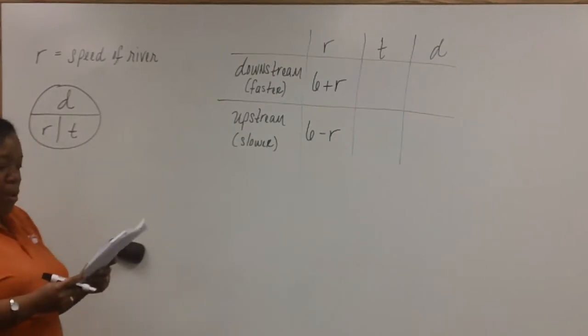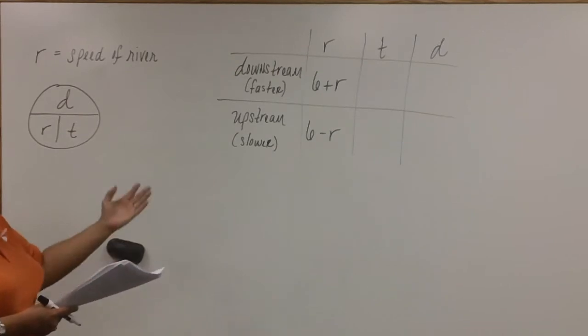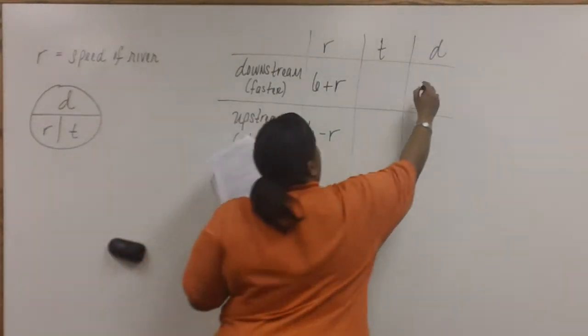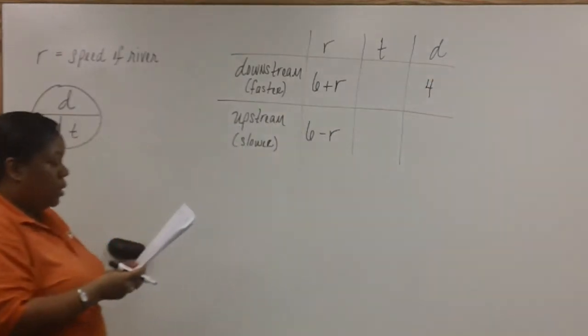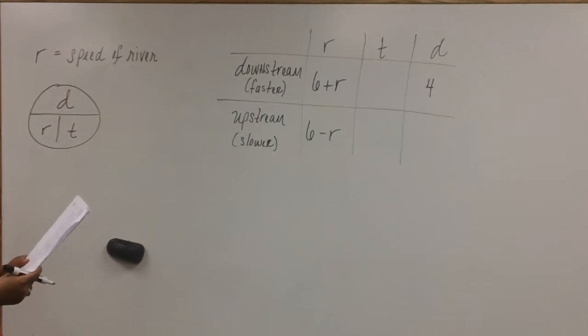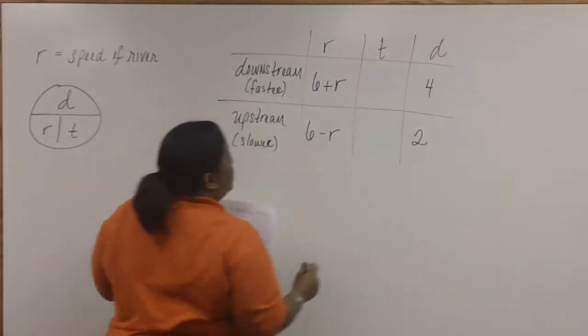Then we're told that the boat is paddled four kilometers downstream, so we're given the distance for downstream. It's four. Then it says that at the same time it takes to go two kilometers upstream. So, we're given the distance for upstream, which is two.